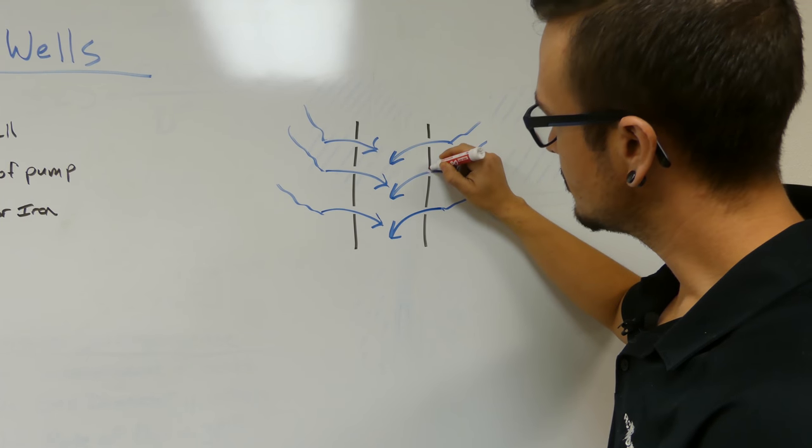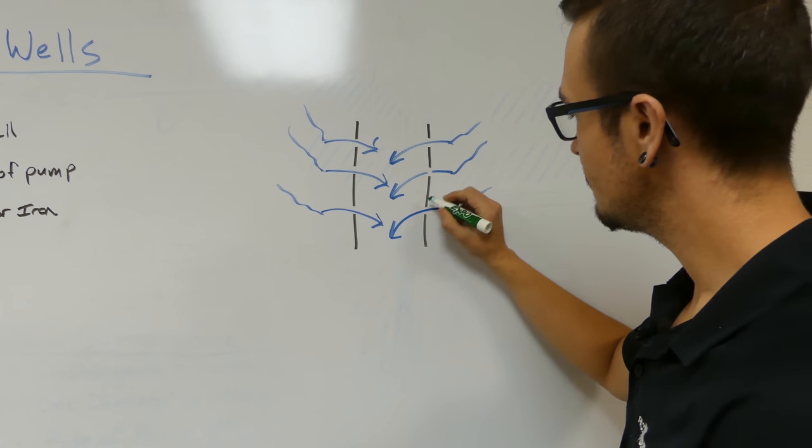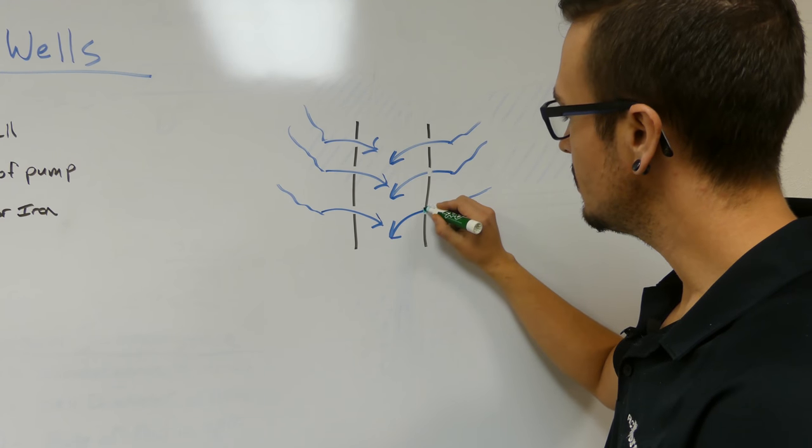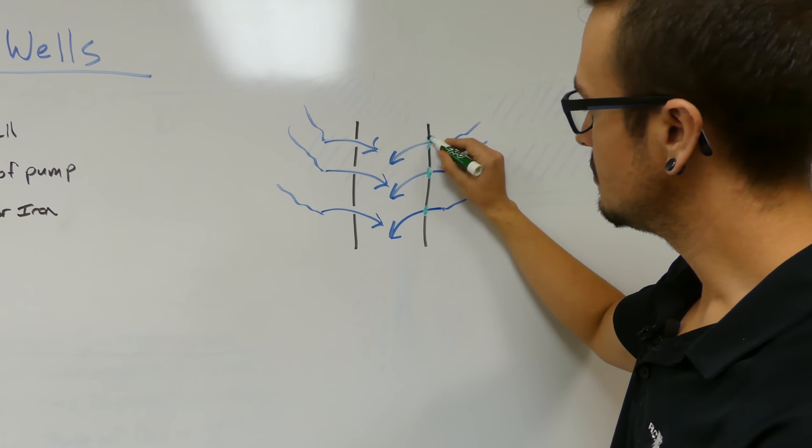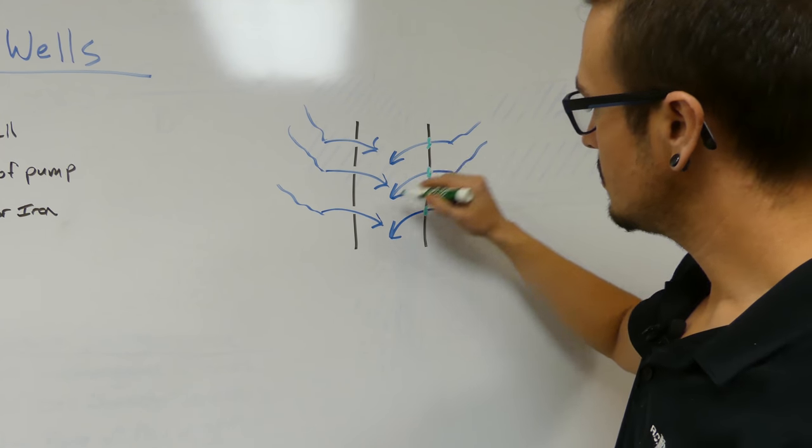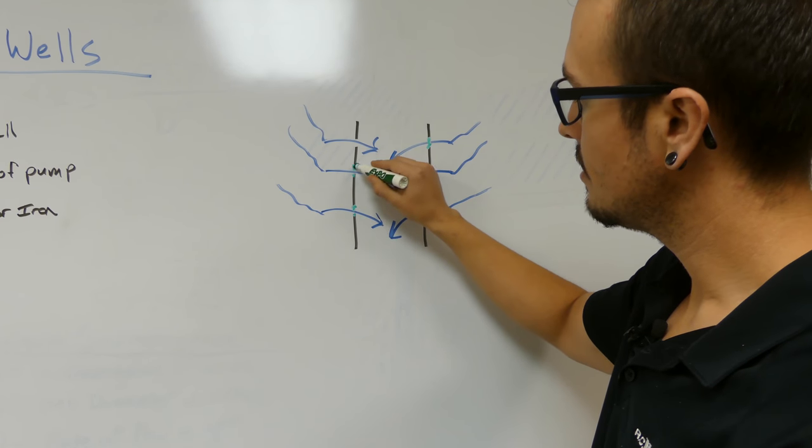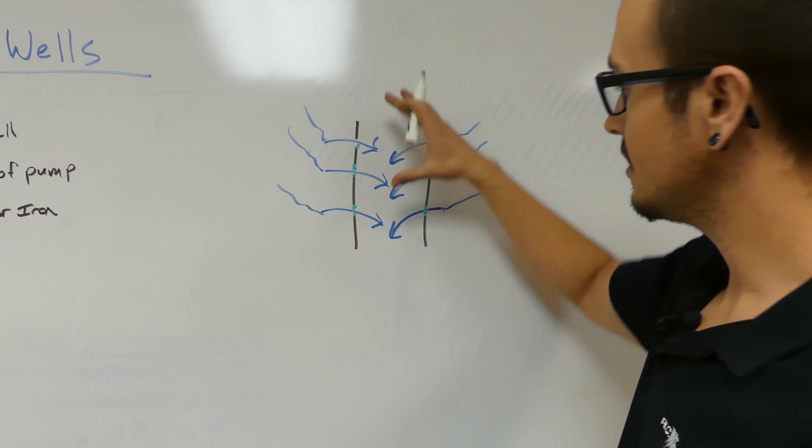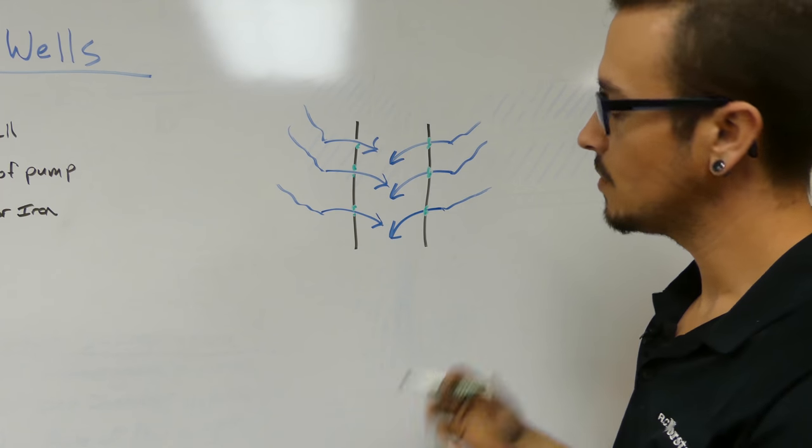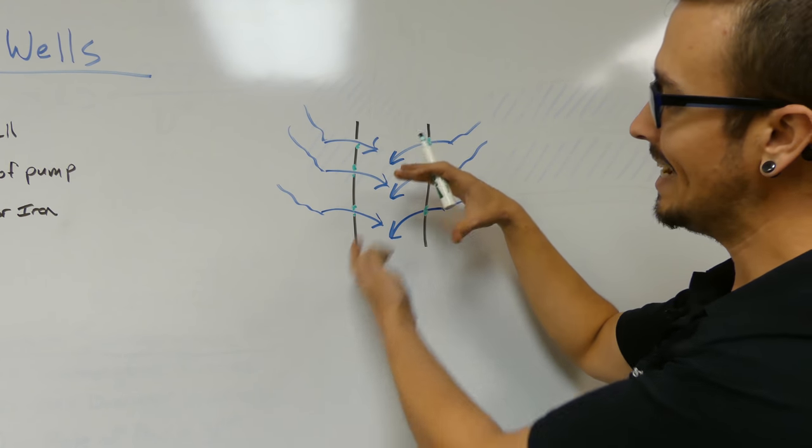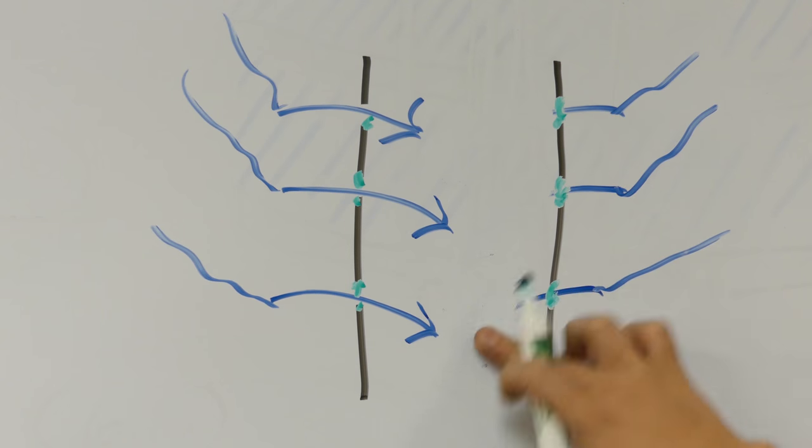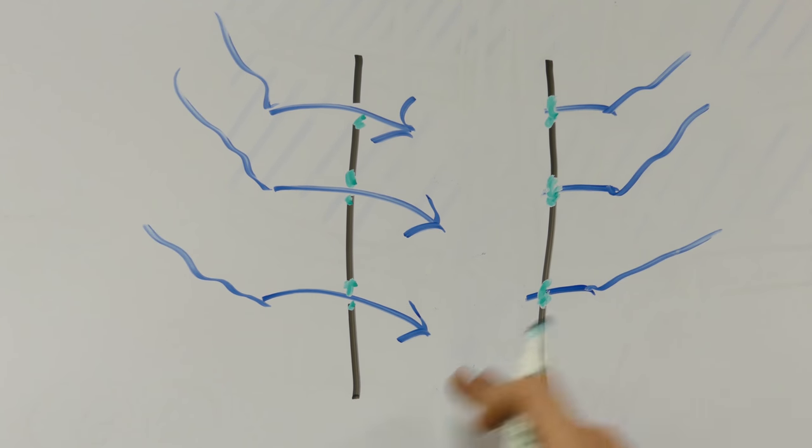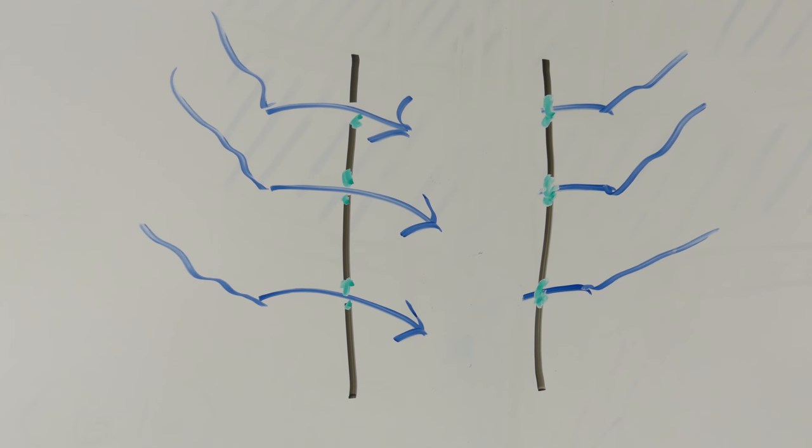But then over time, these areas here can start to get blocked off. In some cases, completely. Maybe that one's letting water through a little bit, but the rest of these are kind of getting blocked off. And it's going to either decrease the production. Well, typically, it'll start by decreasing the production. And then it could potentially cut off the production completely from some of these areas while still having others available. So you're going to really notice this if you've already got a low producing well.